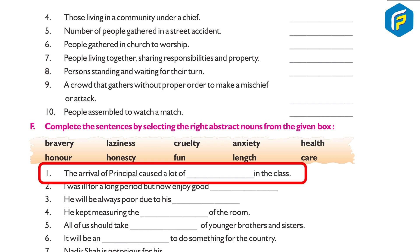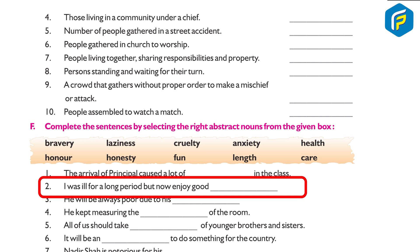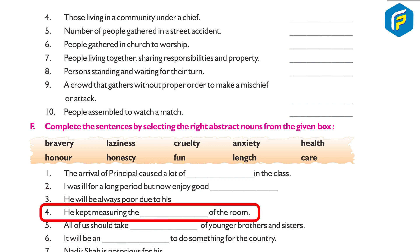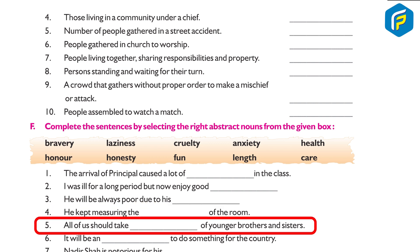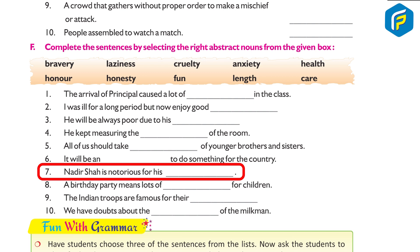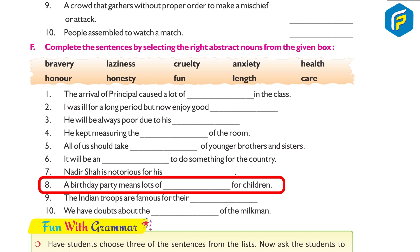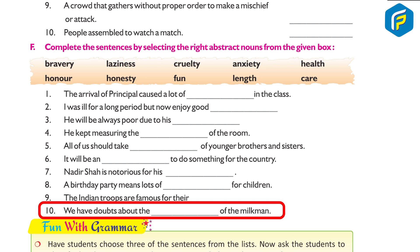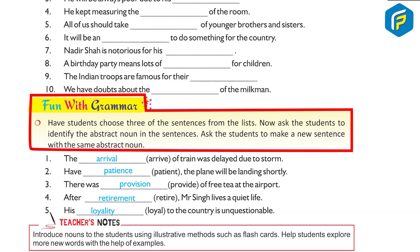(F) Complete the sentences by selecting the right abstract noun from the given box: 1. The arrival of the principal caused a lot of anxiety in the class. 2. I was ill for a long period but now enjoy good health. 3. He will always be poor due to his laziness. 4. He kept measuring the length of the room. 5. All of us should take care of younger brothers and sisters. 6. It will be an honor to do something for the country. 7. Nadir Shah is notorious for his cruelty. 8. A birthday party means lots of fun for children. 9. The Indian troops are famous for their bravery. 10. We have doubts about the honesty of the milkman.